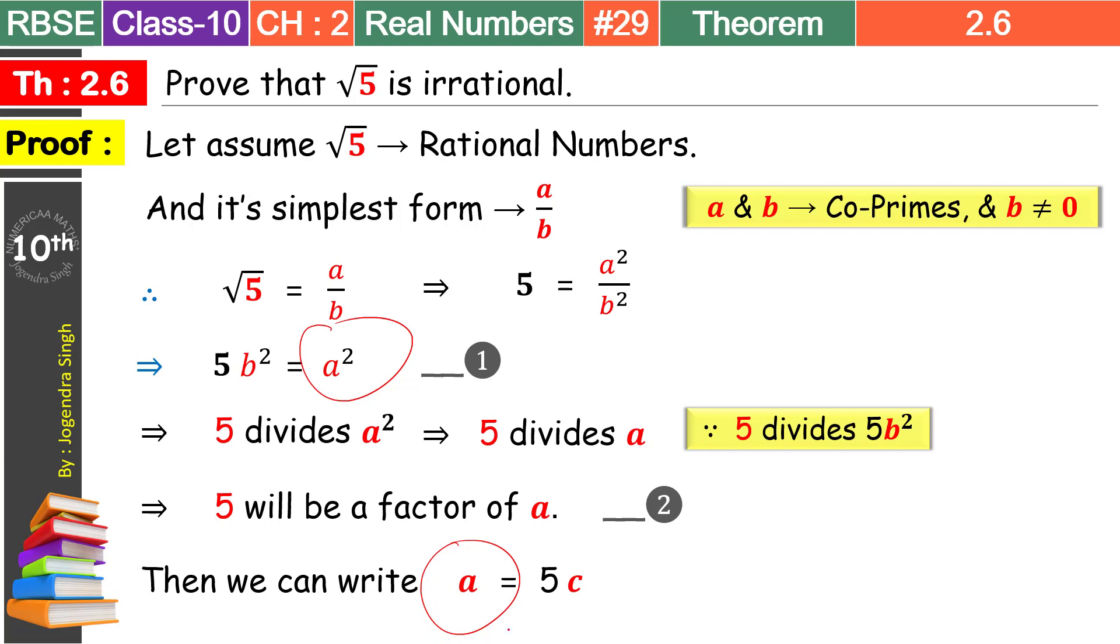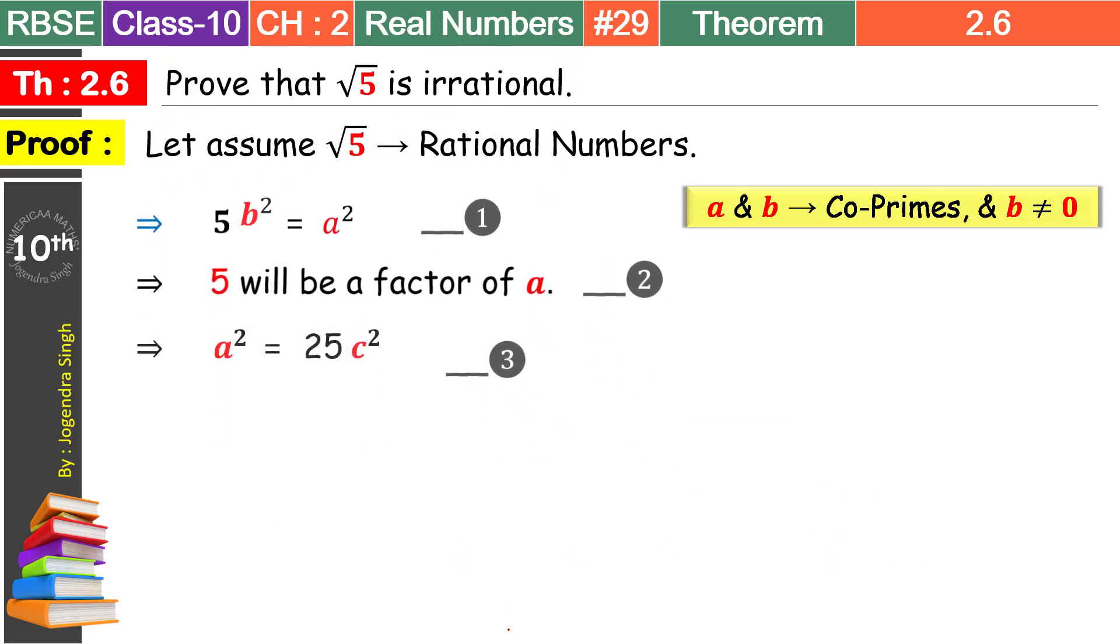Yahan bhi a square ho jayega. So by squaring both the side we get a square is equal to 25c square. Yahan se dekhna yahan pe 25 ho raha hai. 5 square means 25. Chaliye isko equation number 3 de dete hain hum. Aur humari required things ko hum rakhte hain. Baqi sab ko hum wipe out kar dete hain.